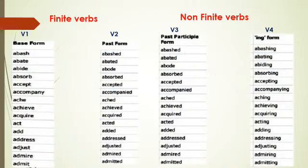To summarize: finite verbs are the base form or present tense (V1) and past form (V2). Non-finite verbs are V3 — the past participle form — and V4, the ing form. So V1 and V2 are finite verbs. V3 and V4 are non-finite verbs.